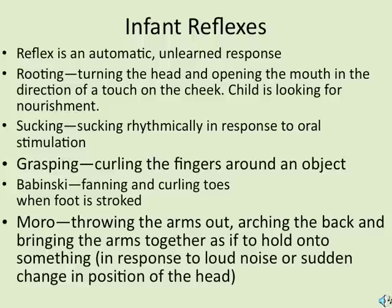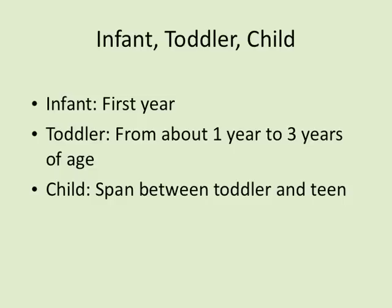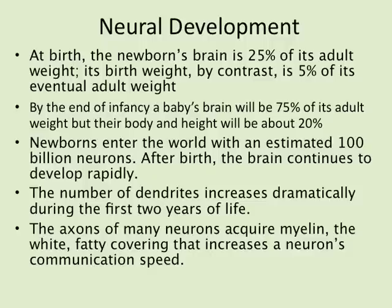Physical development in infancy and childhood is very profound — you grow faster earlier in life. An infant is in the first year; a toddler is from year one to three; and a child spans from toddler to teen. As our brain develops, we're not born with a fully developed brain — at birth, the brain is about 25 percent of its adult weight, while body weight at birth is about 5 percent of eventual adult weight.